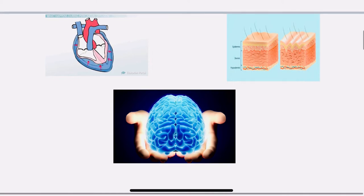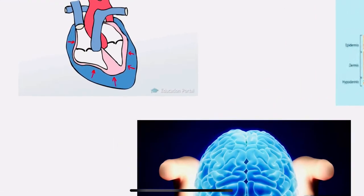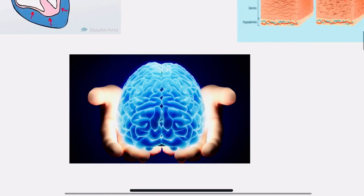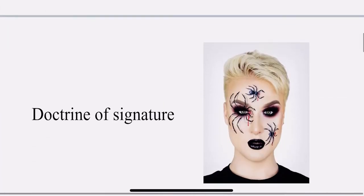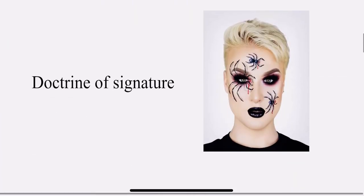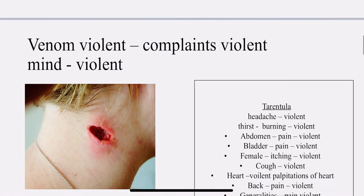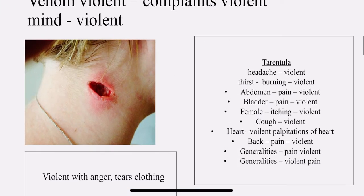The sphere of action: the spiders act on the heart, on the nervous system, and on the skin. Now the doctrine of signature — we are going to compare the spiders along with the symptoms and make a comparison to know the remedy very well.